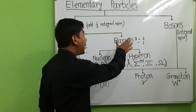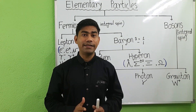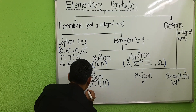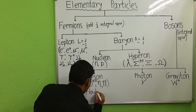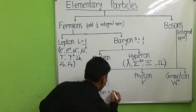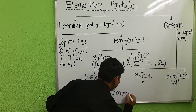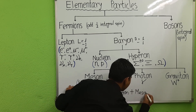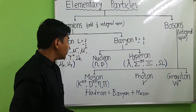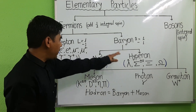Baryons and mesons are called hadron particles, that is heavy particles. Hadron equals to baryon plus meson.